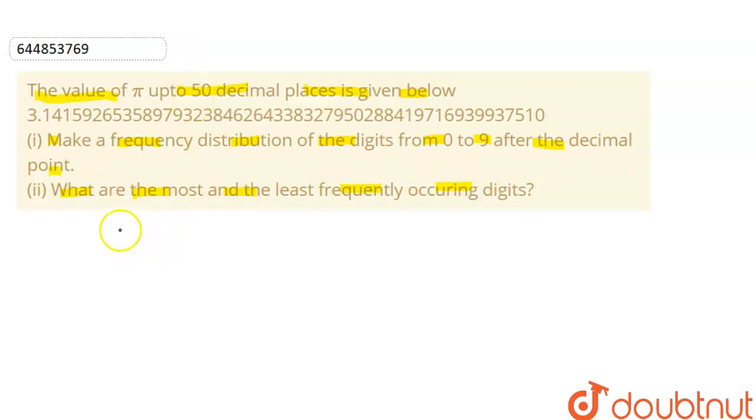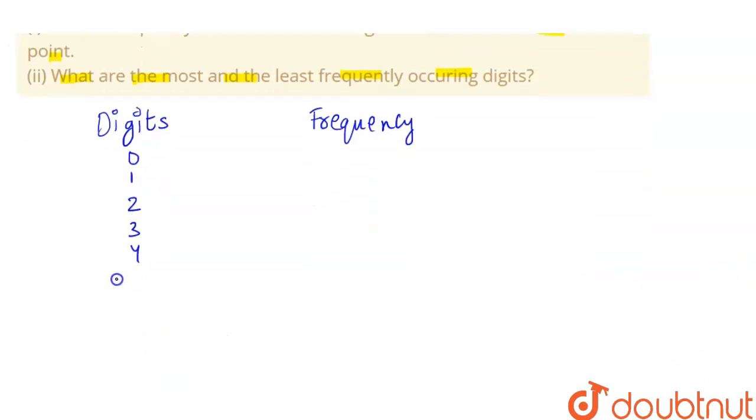Let us make the frequency distribution table. That is digits here and here is the frequency. Digits can be 0, 1, 2, 3, 4, 5, 6, 7, 8 and 9.